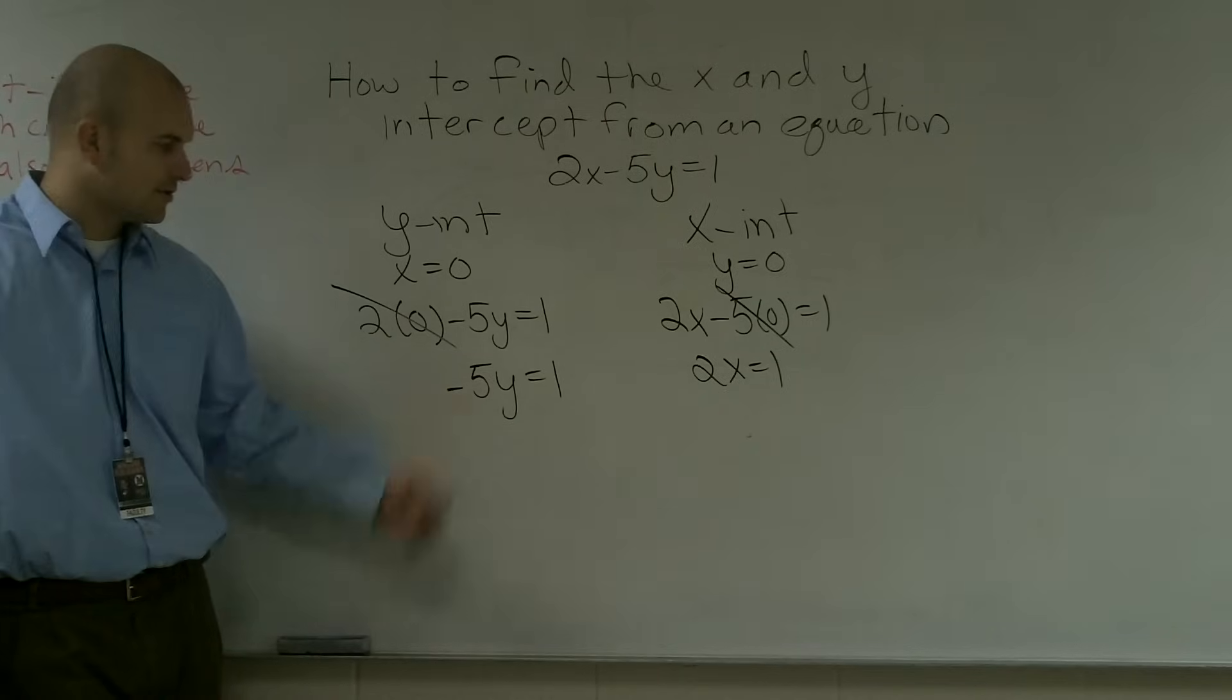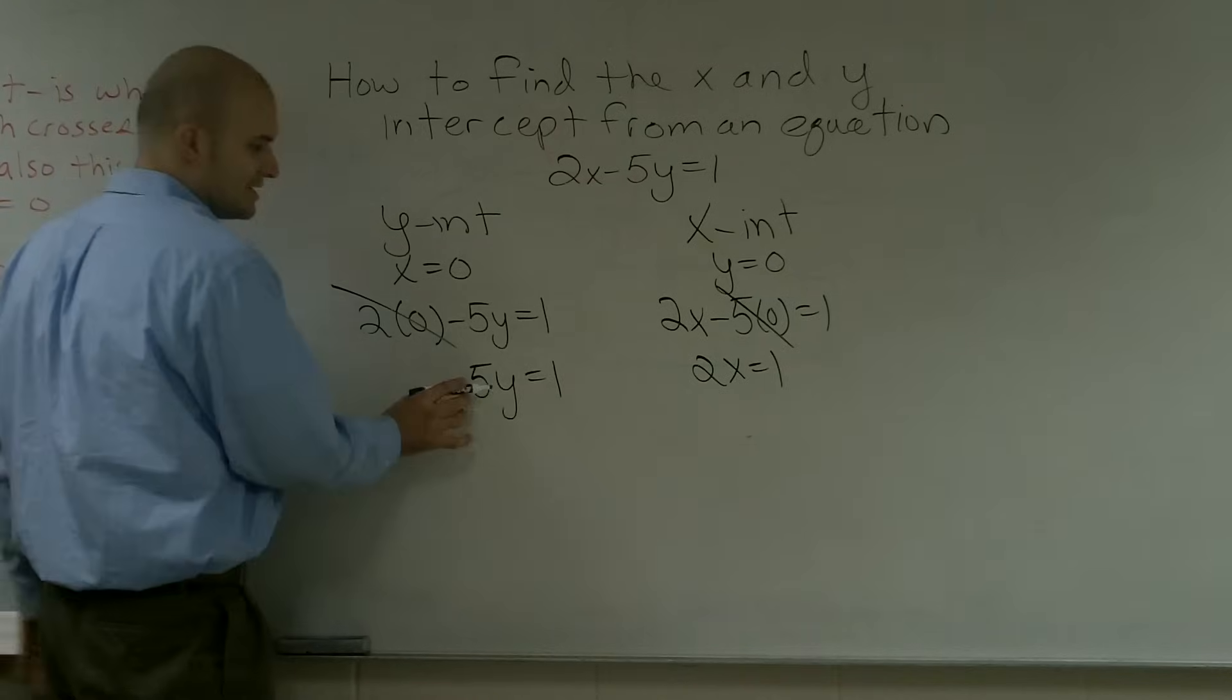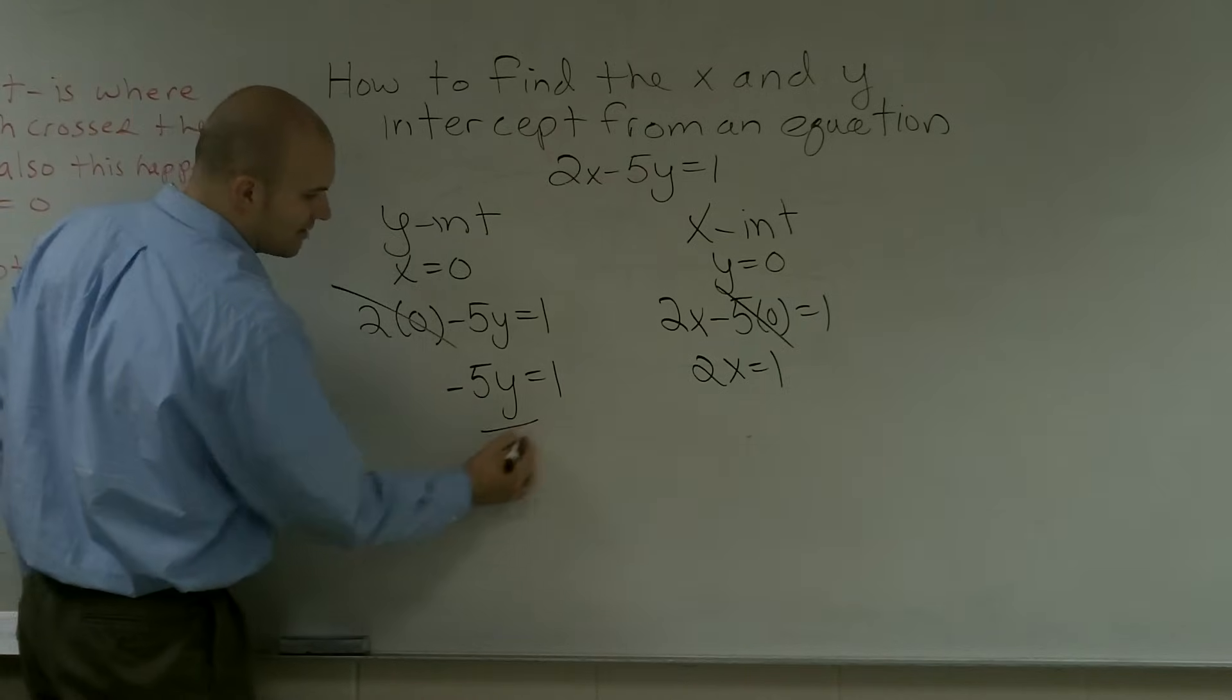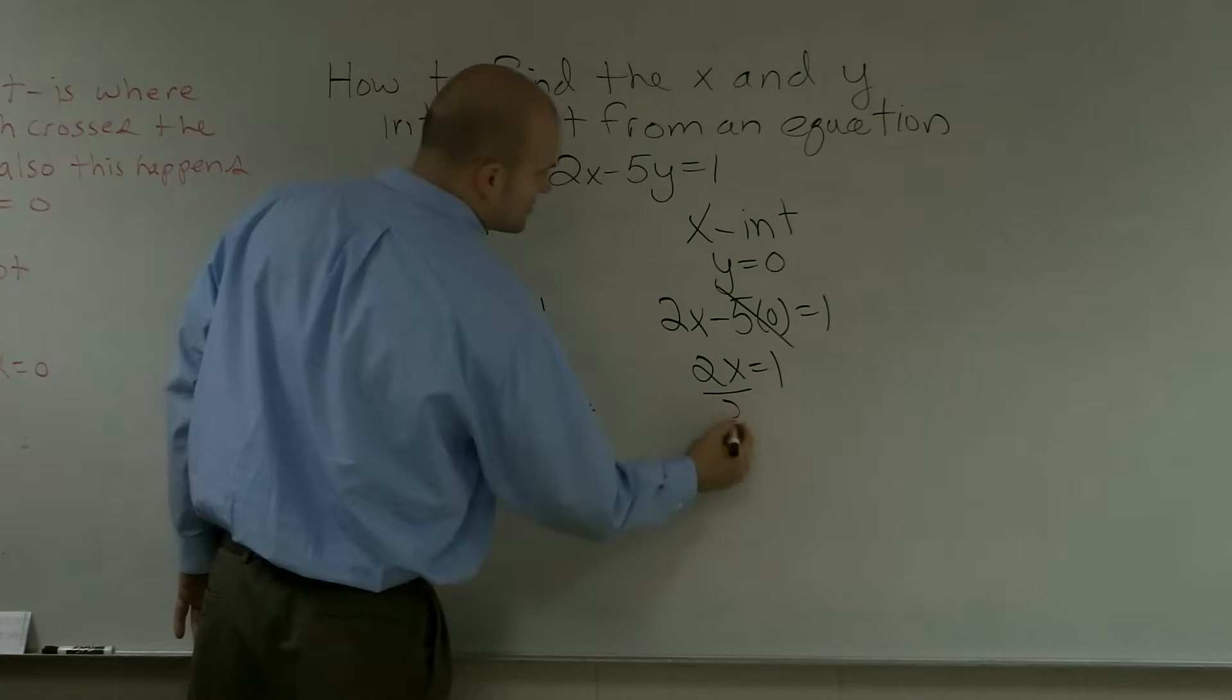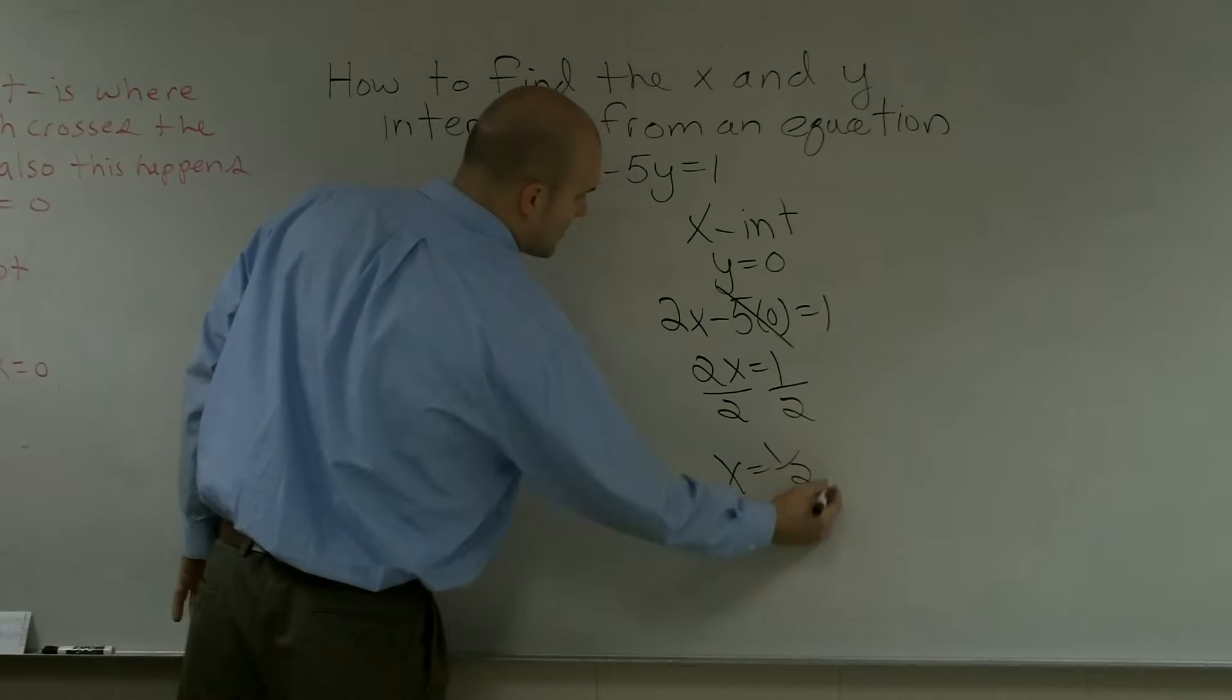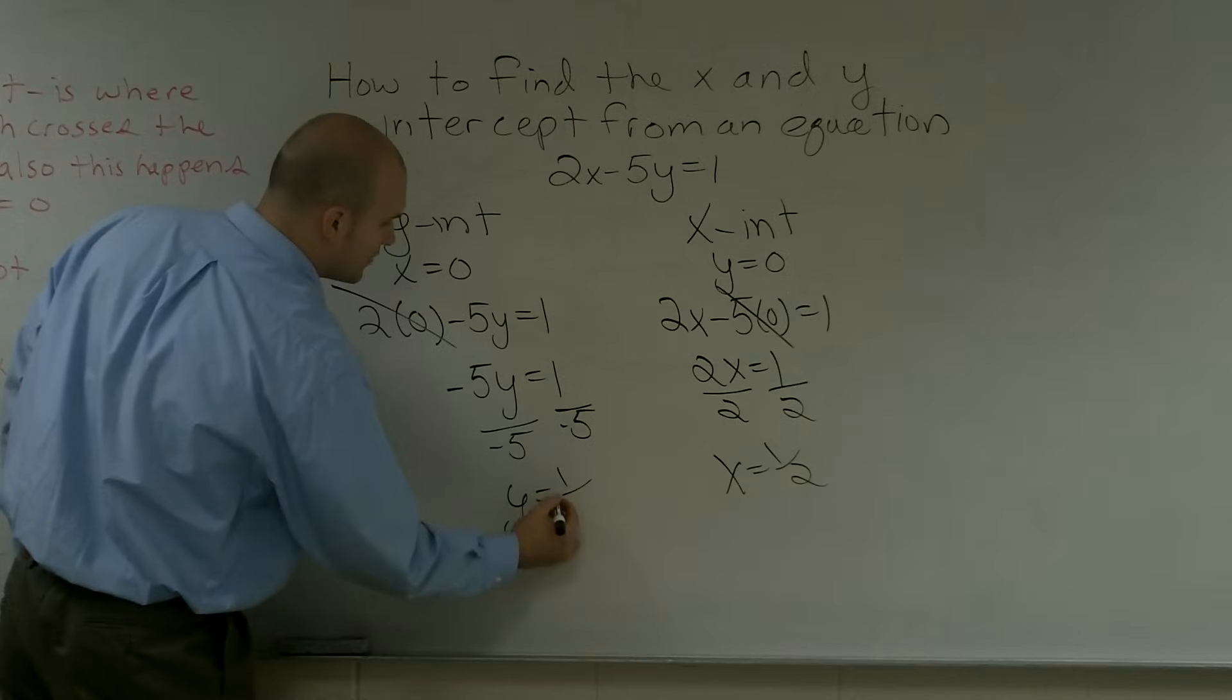We're just going to use our division property of equality. Since my negative 5 is multiplied by my y, I'm going to divide by negative 5 on both sides. And here, I'm going to divide by 2 on both sides. Therefore, x equals 1 half. And y equals negative 1 fifth.